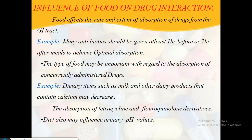Dietary items such as milk and other dairy products that contain calcium may decrease the absorption of tetracycline and fluoroquinolones. Tetracycline, when used in combination with milk, which contains calcium, forms insoluble complexes. When these insoluble complexes are formed, they reduce and decrease the absorption of tetracycline. Diet may also affect or alter the urinary pH value.